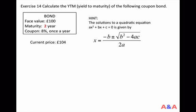One thing worth noting: for zero coupon bonds, yield to maturity is simply the yield or implied interest rate we studied previously. We studied how to compute the implied interest rate of zero coupon bonds in a past class, and for zero coupon bonds, yield to maturity is exactly that. But for a coupon bond — even a two-year bond — you have to follow the yield to maturity formula.